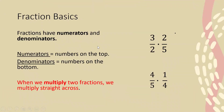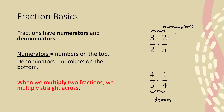First we're going to begin with some fraction basics. Fractions have numerators and denominators — those are simply the names of the numbers. The numerators are the numbers on top. So for example, in these fractions right here, our numerators would be three and two. And our denominators would be the numbers on the bottom, so five and four would be our denominators.